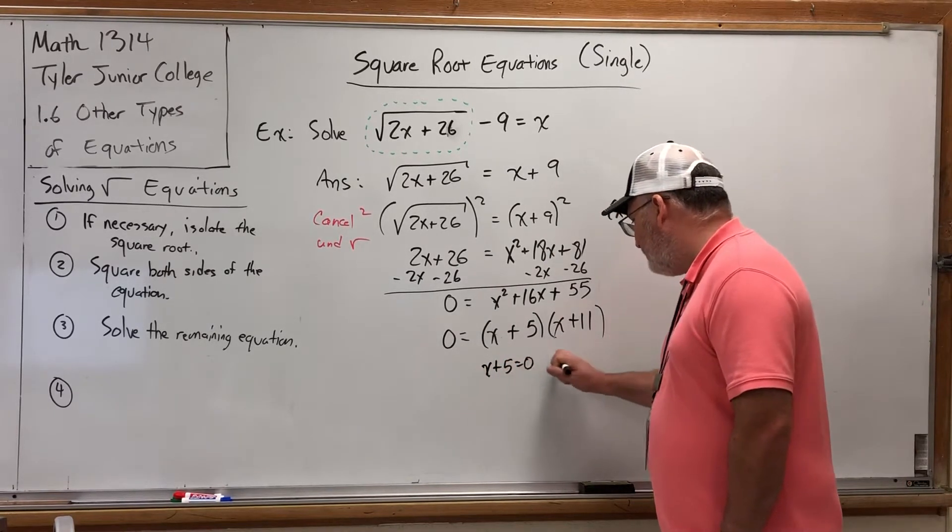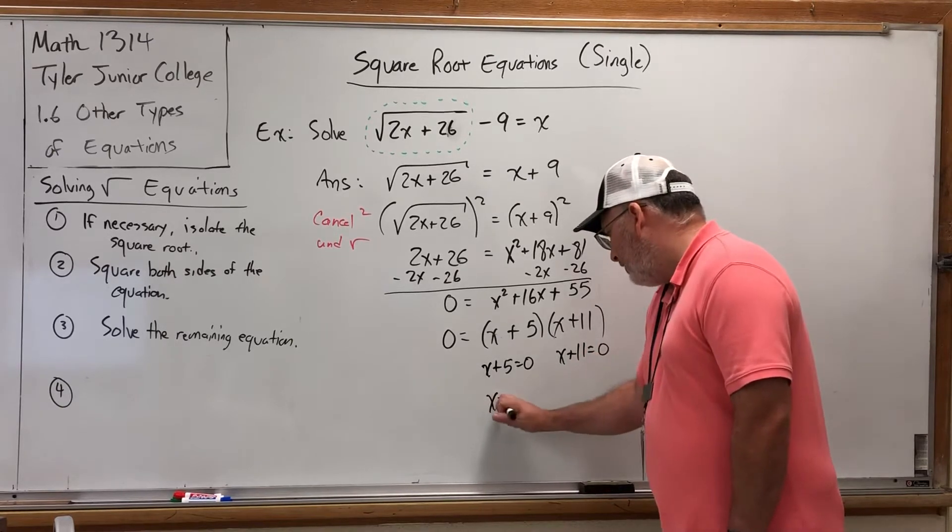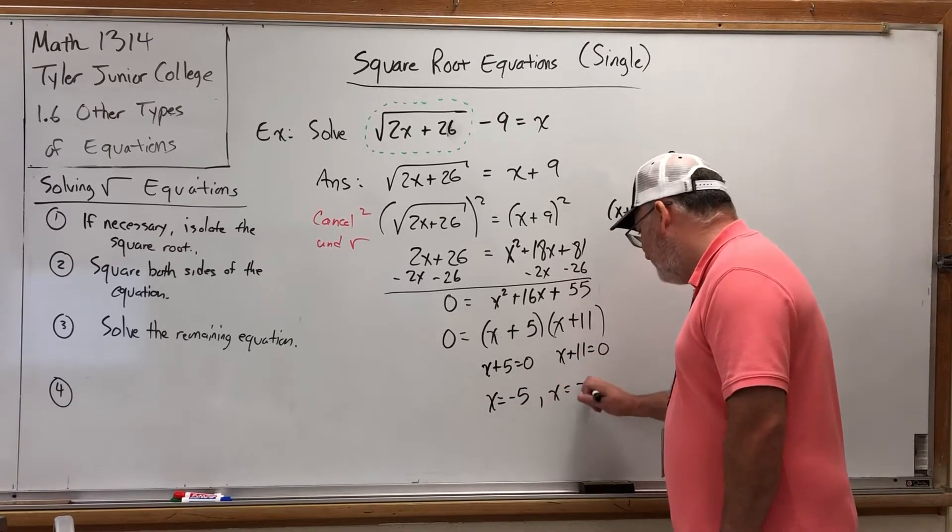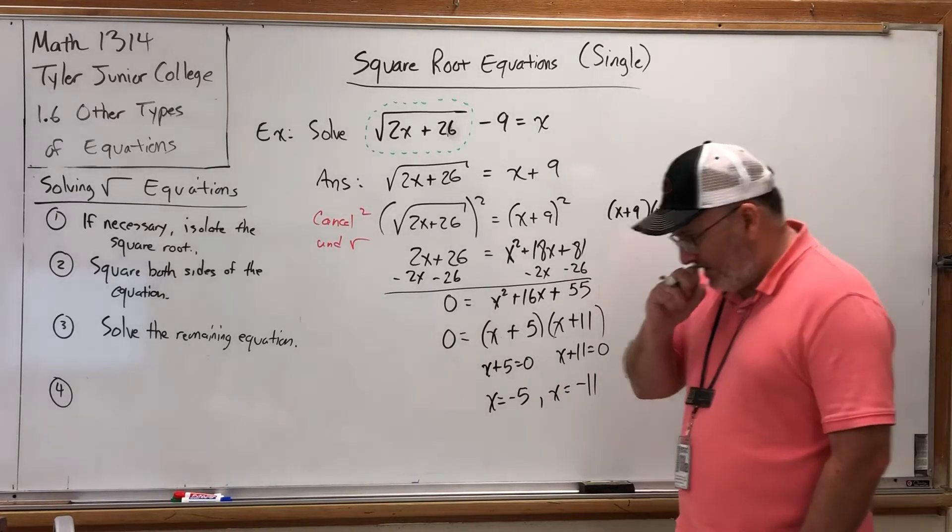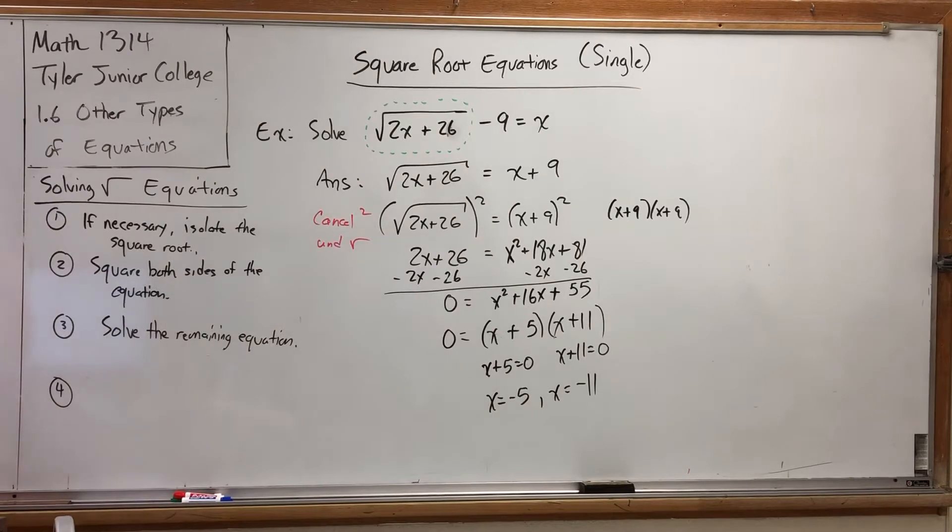x plus 5 is equal to 0. x plus 11 is equal to 0. So, giving us two tentative solutions of negative 5 and negative 11. Why did that man say tentative? It says x equals. Aren't we done?